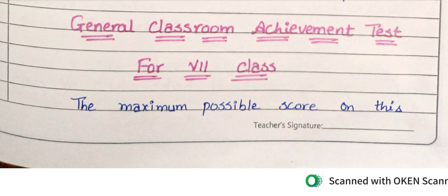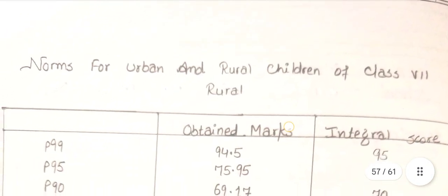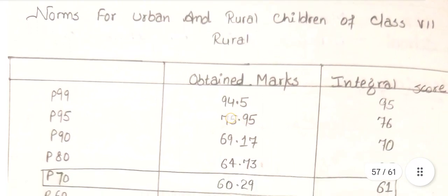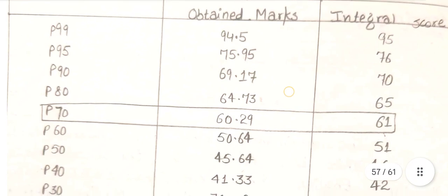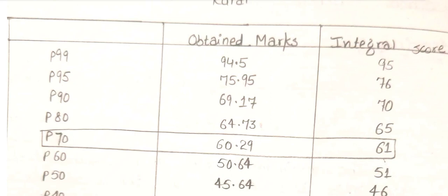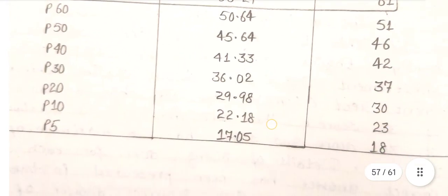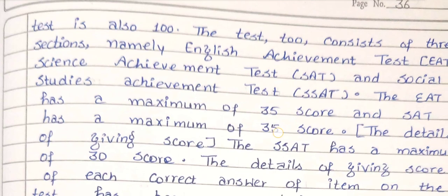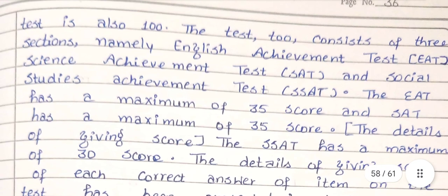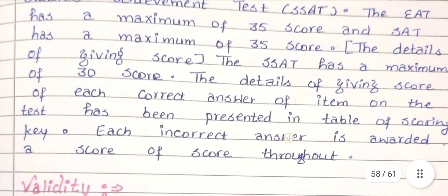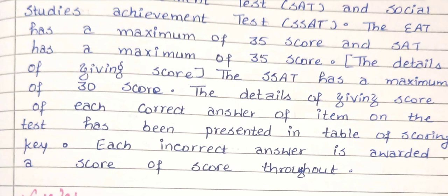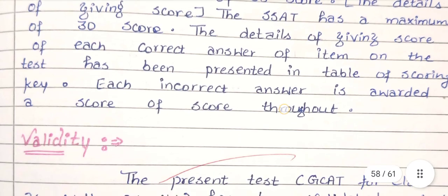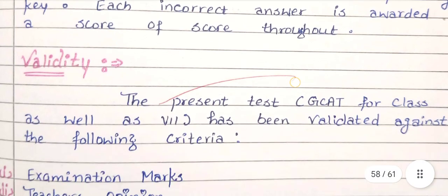General classroom achievement test for class 7th. The maximum possible score on this test is also 100. The test consists of 3 sections: EAT, SAT, and social studies. The test structure for class 7 follows the same format. Let's talk about the validity.